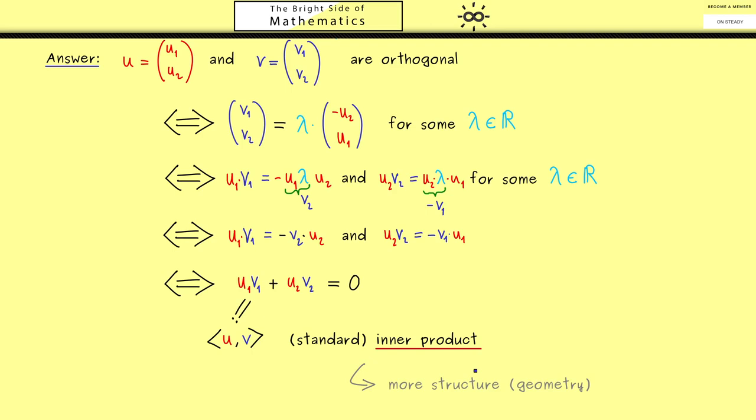Even more, they also let us calculate lengths. Hence the standard inner product gives us more structure for our vector space, namely geometry. So you see with this definition here, multiplying vectors makes sense now. However please don't forget the result is not a vector anymore but a number. Therefore it's very helpful that we don't use a dot for the inner product but the pointy brackets.